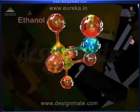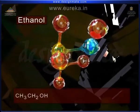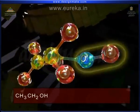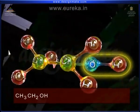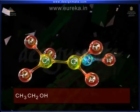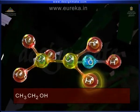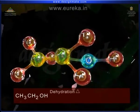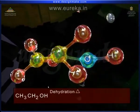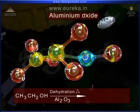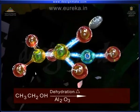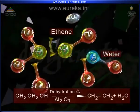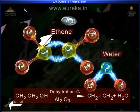For example, in ethanol CH3CH2OH, the hydroxyl group and one of the hydrogen on neighboring carbon are eliminated under the action of the catalyst aluminum oxide at high temperature to give ethene molecule and water.